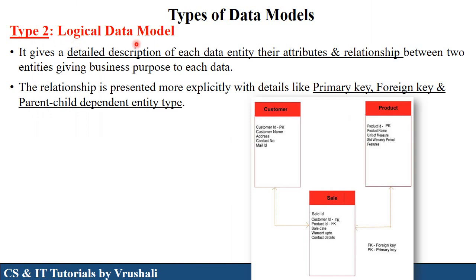The next type is the logical data model. Logical data model is a detailed description of each and every entity, their attributes, and their relationships. It represents primary key, foreign key, and parent-child relationships of classes. In this example, customer sells a product. Customer and their attributes like ID, name, address; product having their attributes ID, name, and other attributes; and sales. The sales relationship also has its own attributes — sale ID, sale date, etc. So it shows the detailed relationship between them.